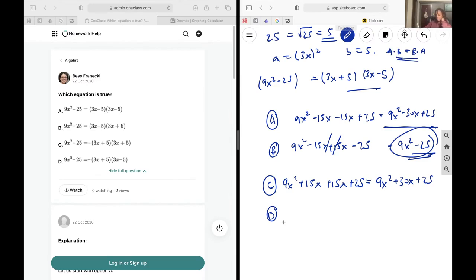But I can just double check that by using FOIL to expand it out, and I get 9x squared minus 15x plus 15x minus 25. These two cancel and I'd get 9x squared minus 25.